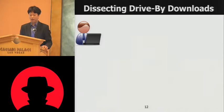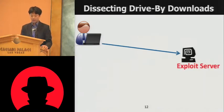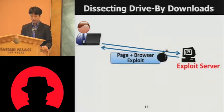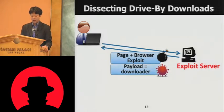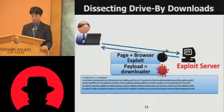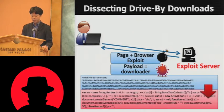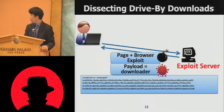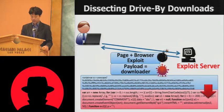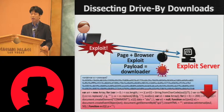Let's dissect drive-by-downloads. What happens is the visitor visits an exploit server, which serves them a page plus a drive exploit. And then there's a payload, which we call the downloader. All of these exist in the form of JavaScript, and often obfuscated JavaScript. The obfuscated version looks somewhat like this, and here's the actual exploit. You exploit the visitor's machine without them knowing anything had happened.